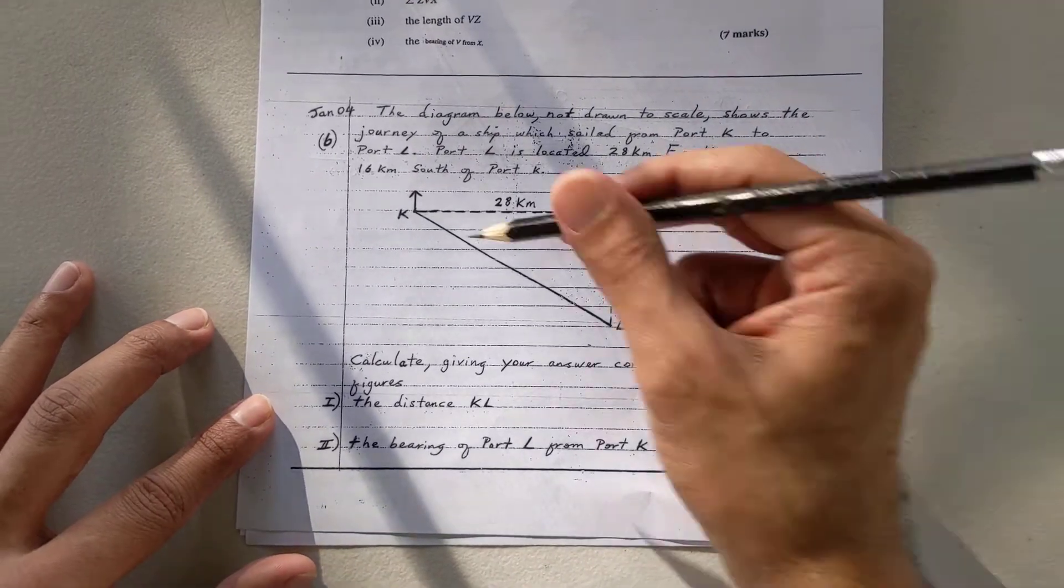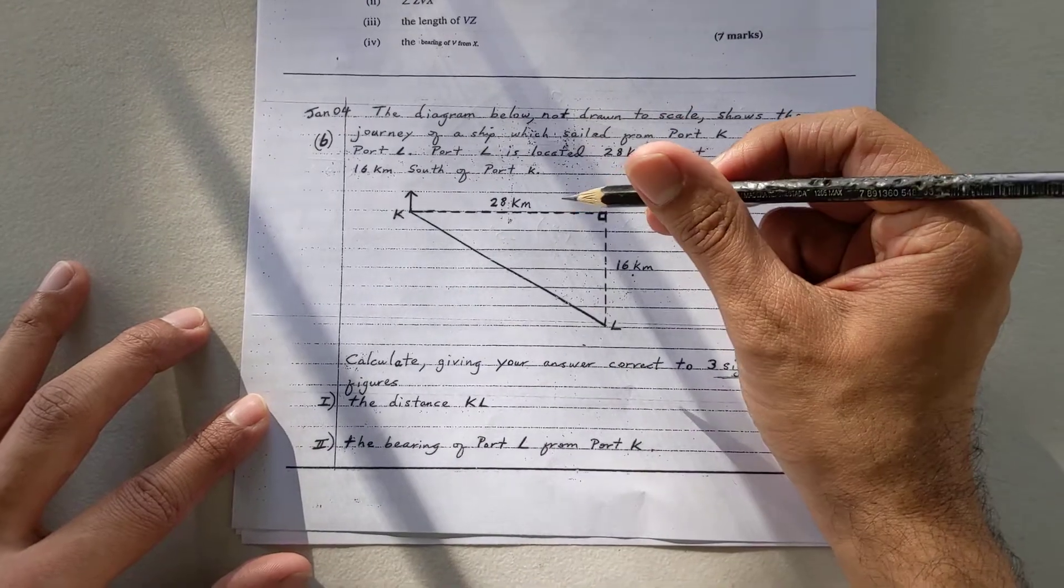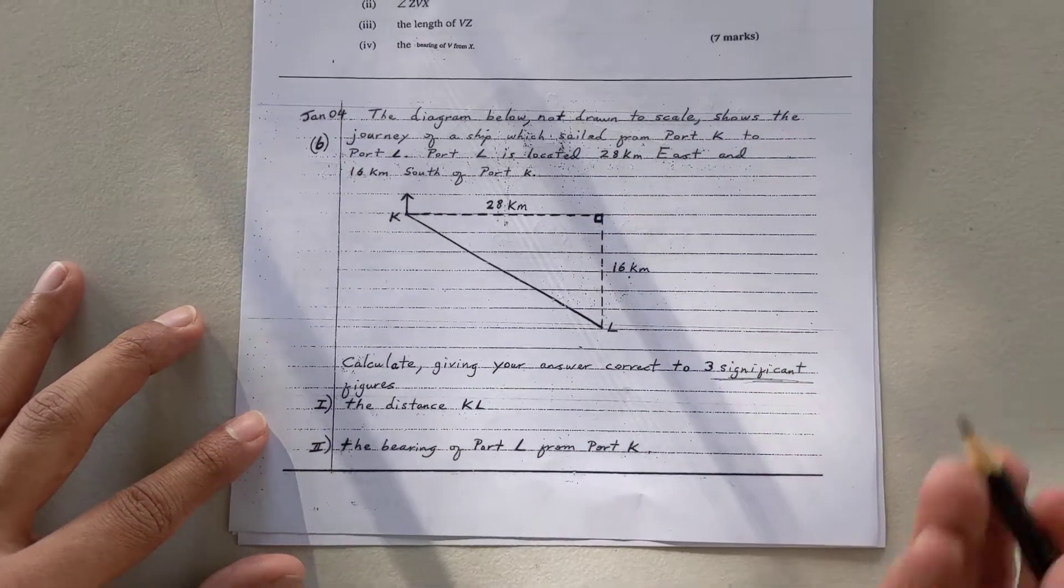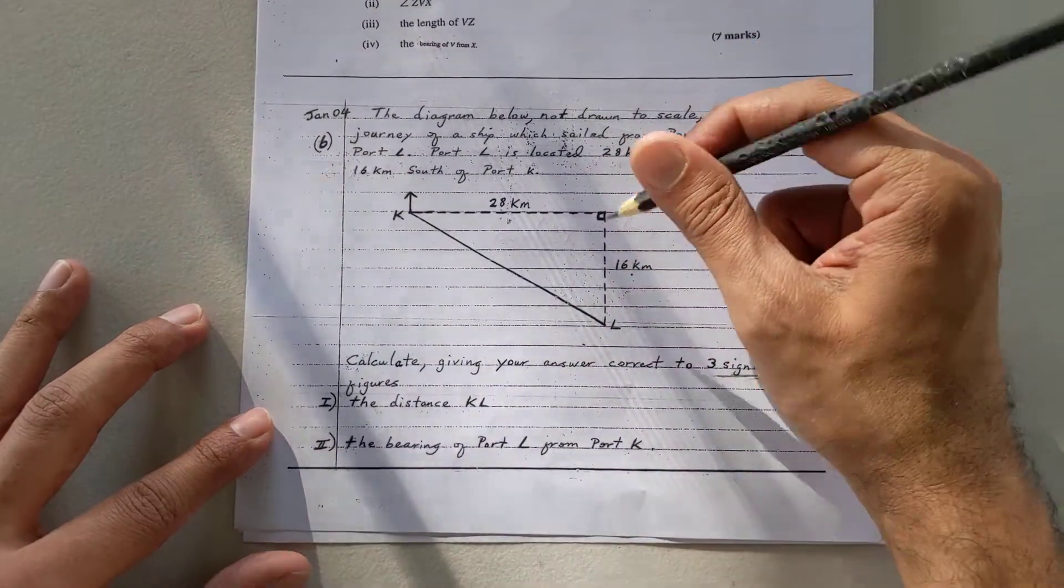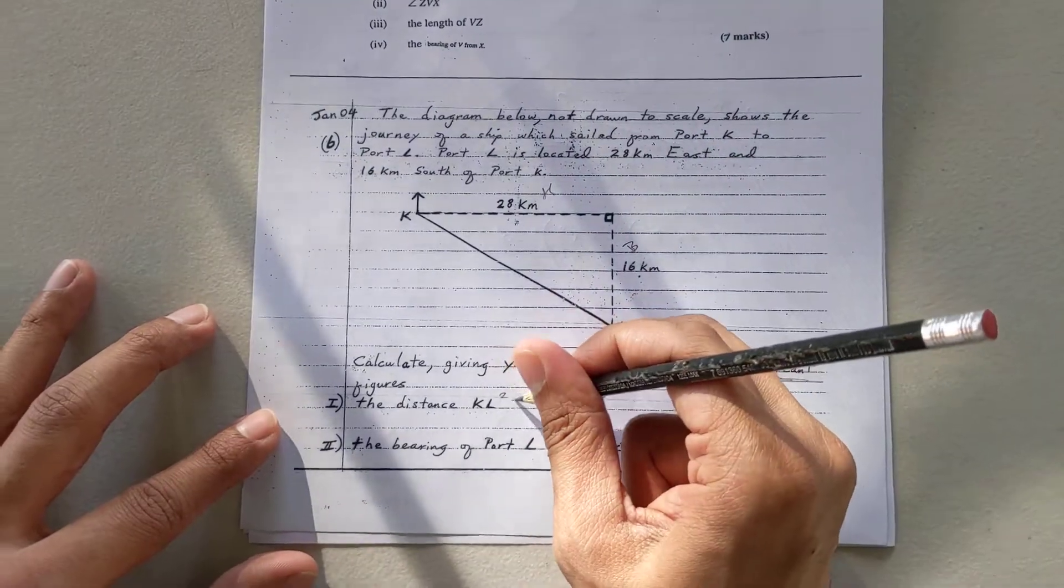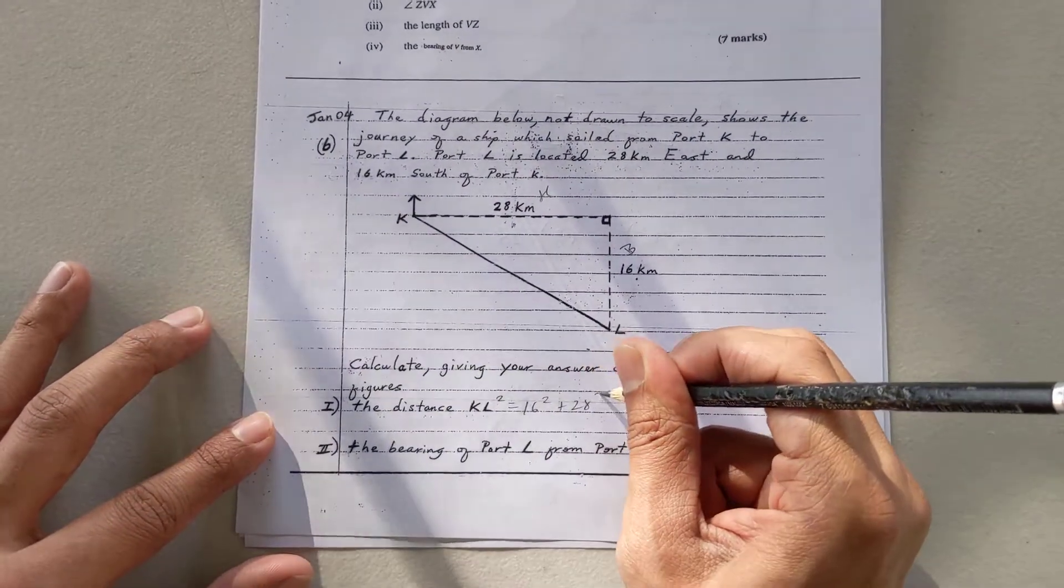The distance KL, so the distance from K to L, this is a right-angled triangle here. So I'm going to use Pythagoras' theorem. They give me two sides. I want to find the third side. If I want to call this base, I'll call this height. KL squared will be 16 squared plus 28 squared.